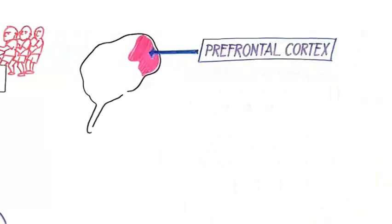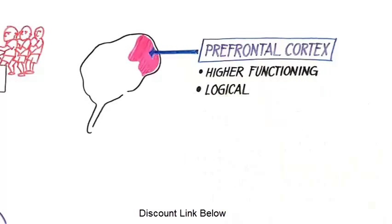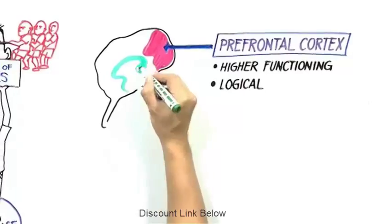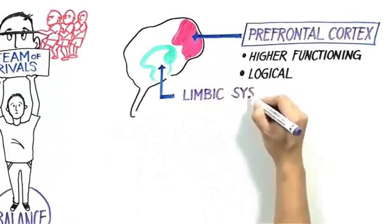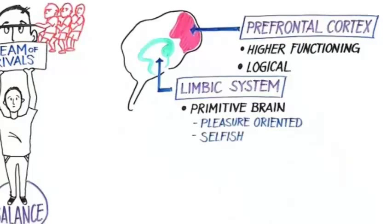The prefrontal cortex is a higher functioning part of the brain which is rational and logical, and it understands consequences. But the limbic system is a primitive brain. It has no ability to delay gratification. It is pleasure-oriented and selfish. It is concerned with seeking pleasure and avoiding pain.